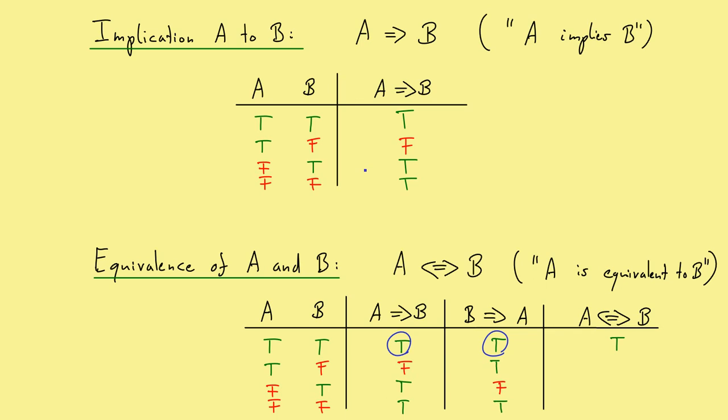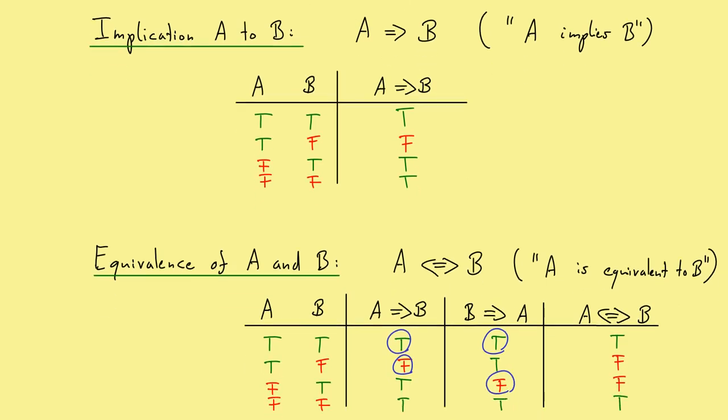Equivalence means both implications hold. So here this one holds and this one holds, so our equivalence is true. And here you can see this one is false, but this is true, therefore we have here false. Here the other way around, B to A is false, therefore also the equivalence is false. And here you can see, again, both implications are true and therefore the equivalence is also true. Or in other words, A and B are equivalent when they have the same truth value. So both are true or both are false, but not the mixed ones.